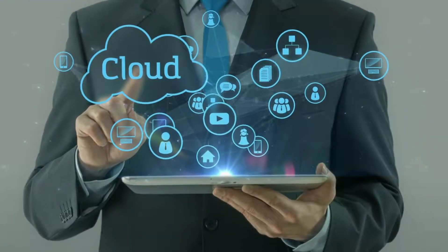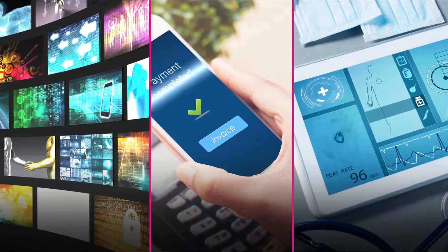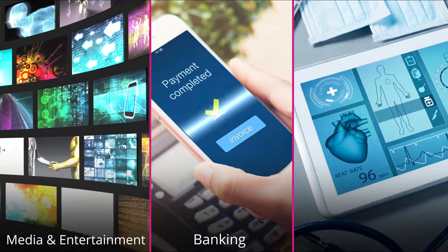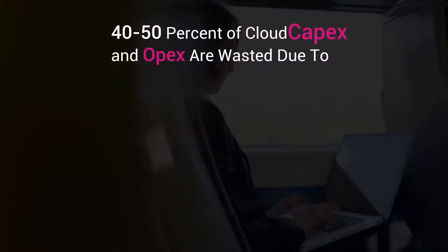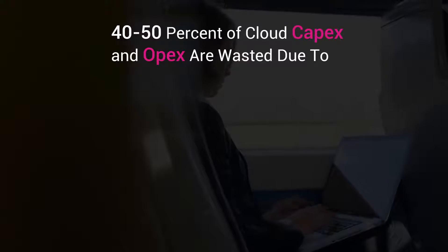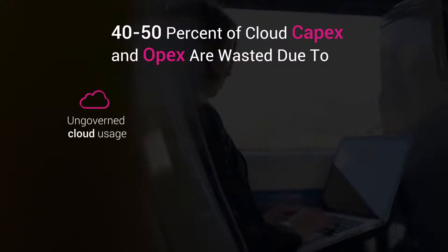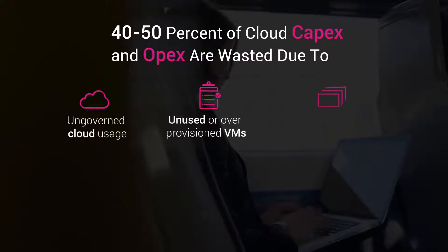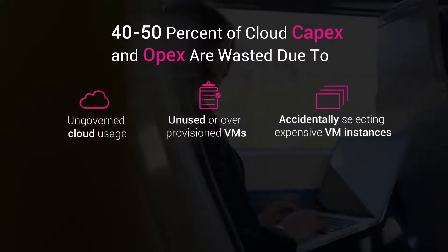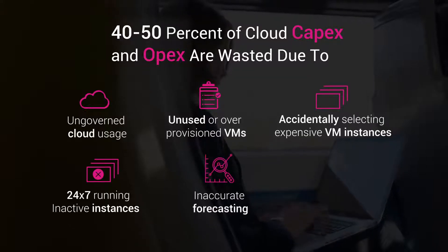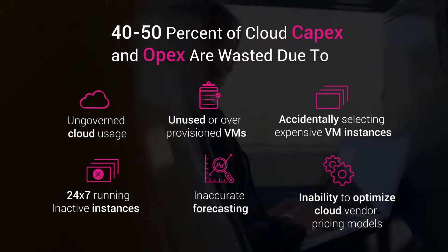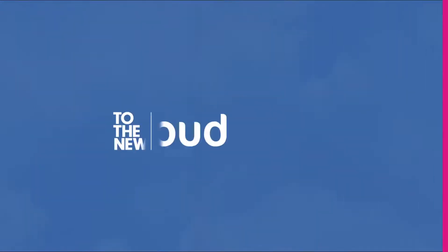Cloud has become the new norm. Businesses across industries such as media and entertainment, banking, and healthcare are rapidly moving their applications to the cloud. But have you ever wondered if you are spending too much? 40 to 50 percent of cloud CapEx and OpEx are wasted due to ungoverned cloud usage, unused or over-provisioned VMs, accidentally selecting expensive VM instances, 24/7 running inactive instances, inaccurate forecasting, and inability to optimize cloud vendor pricing models.